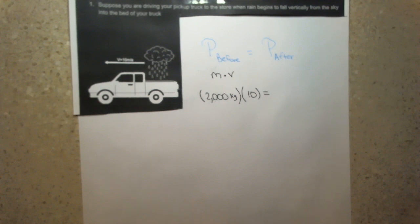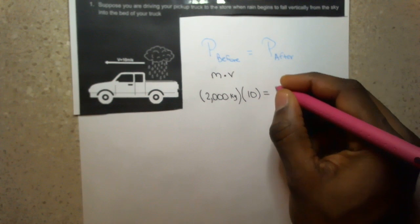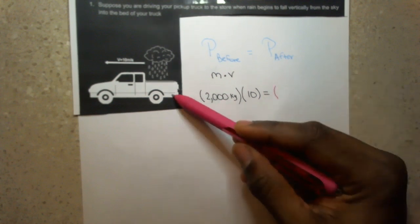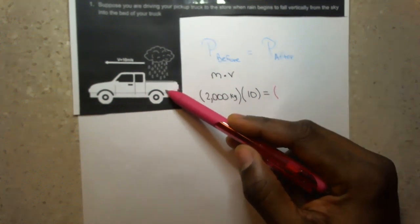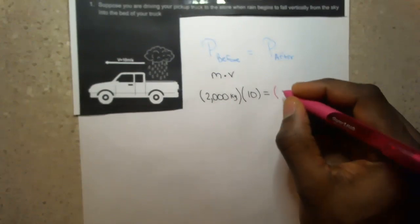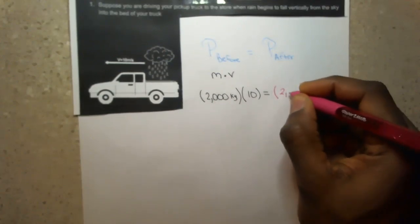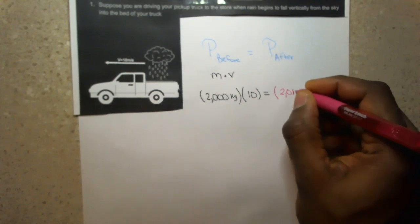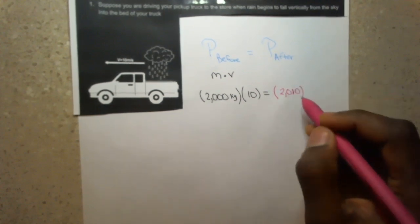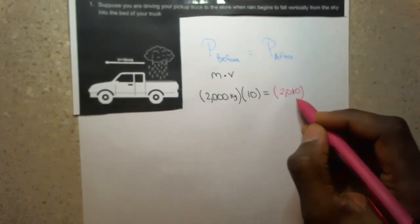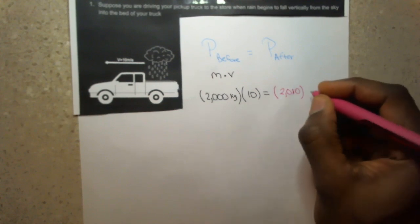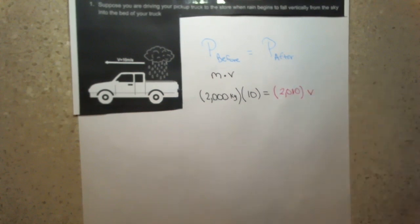Now we're ready to talk about the momentum after. The momentum after, we have the truck with the rain inside of the bed. So let's say that the truck becomes heavier by 10 kilograms. So the mass is now increased by 10. That's the mass of the water. And we don't know this new velocity. That's my new equation set up. I can solve from here.